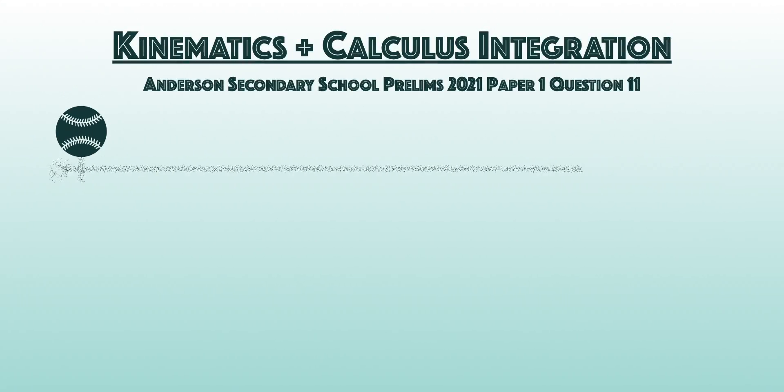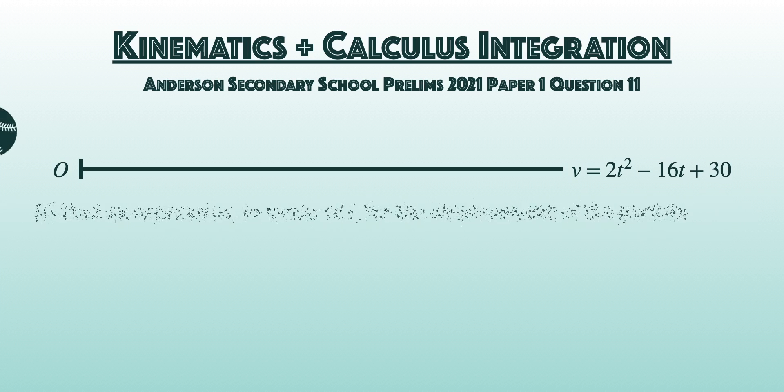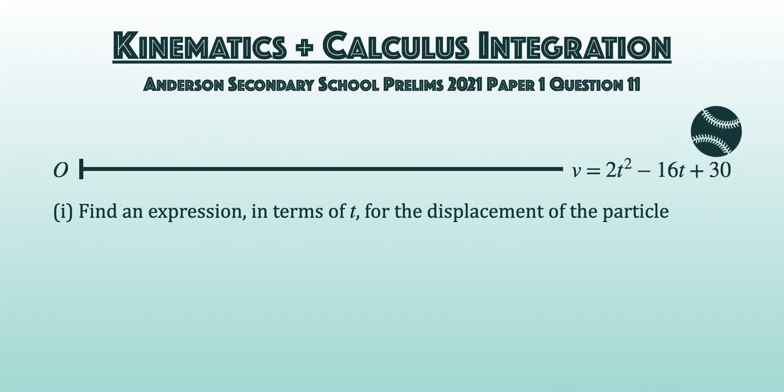A particle moves in a straight line so that t seconds after passing a fixed point O, its velocity v meters per second is given by v equals 2t² minus 16t plus 30. In part 1, find an expression for the displacement.